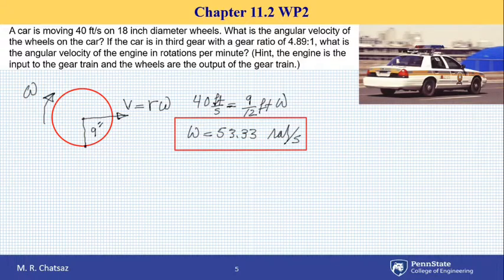Now the second part of the problem says that if the car is in the third gear with a gear ratio of 4.89 to 1, what is the angular velocity of the engine in RPM, revolutions per minute?